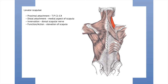Levator scapulae is quite a simple one. Its proximal attachment is the transverse processes of C1 to C4. Its distal attachment is the medial aspect of the scapula. It's innervated by the dorsal scapular nerve. Its function is to elevate the scapula.